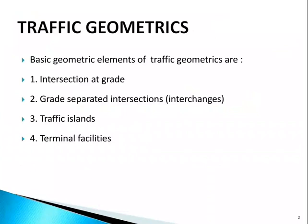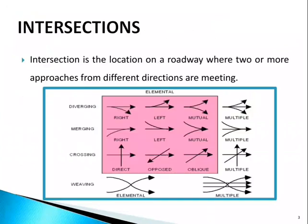The basic geometric elements of traffic geometrics are intersection at grade, grade-separated intersection or interchanges, traffic islands, and terminal facilities. Let us understand intersections first. An intersection is the location on a roadway where two or more approaches from different directions are meeting.